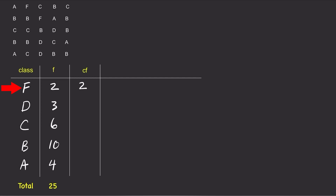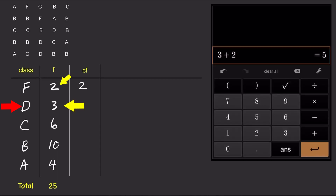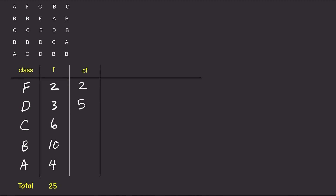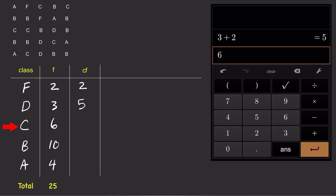For the second class, D, the frequency is 3 plus all the frequencies for every class that came before it. So the cumulative frequency is 3 plus 2 equals 5. For the third class, C, the frequency is 6 plus all previous frequencies, so the cumulative frequency is 6 plus 5 equals 11.